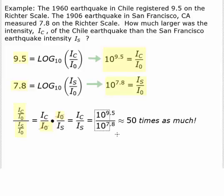So our answer is found simply by dividing those two Richter scale answers. And we get 10 to the 9.5 divided by 10 to the 7.8. And if you put that into your calculator, you get an answer of about 50. So the Chile earthquake was 50 times as much as the San Francisco earthquake.